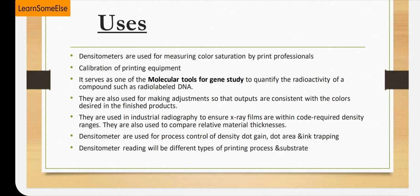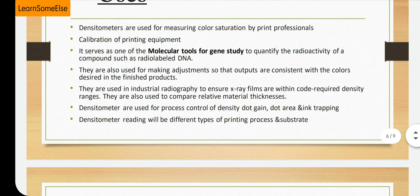They are also used for making adjustments so that outputs are consistent with the colors desired in finished products. They are used in industrial radiography to ensure X-ray films are within code-required density ranges, and to compare relative material thickness. Densitometers are used for process control of density, dot gain, dot area, and ink trapping, with readings varying by printing process and substrate.